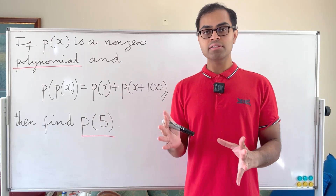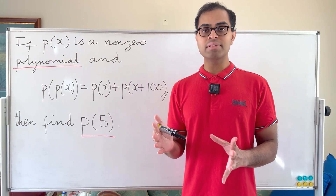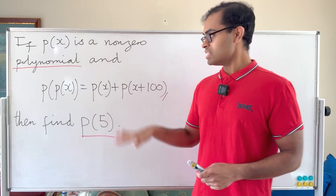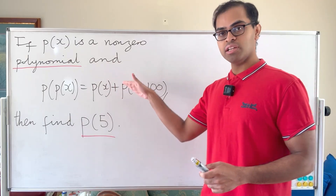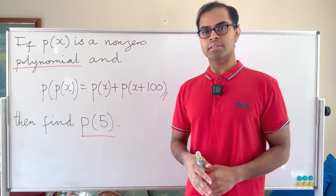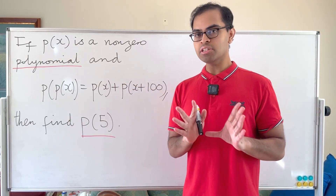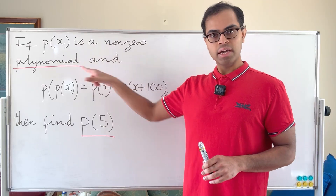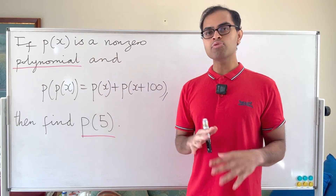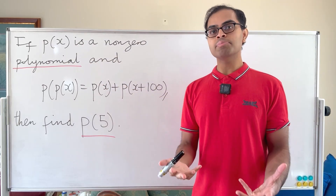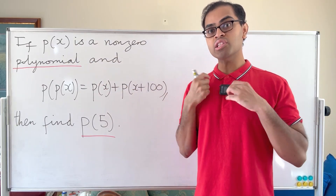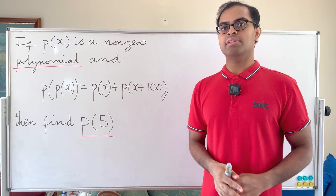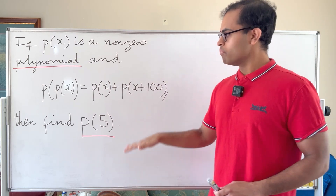My first thought with these problems is they can be devilishly complicated, especially general functional equations like this. But a crucial ingredient here is that p is a polynomial, and polynomials we can write down explicitly and try to solve for their coefficients. That's my first thought when seeing this problem.